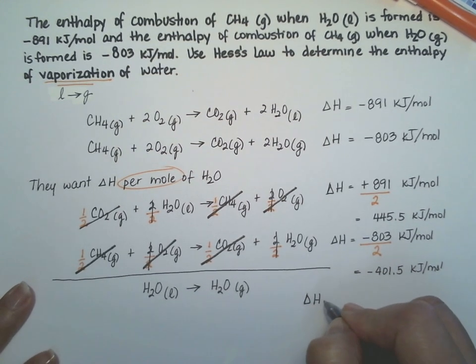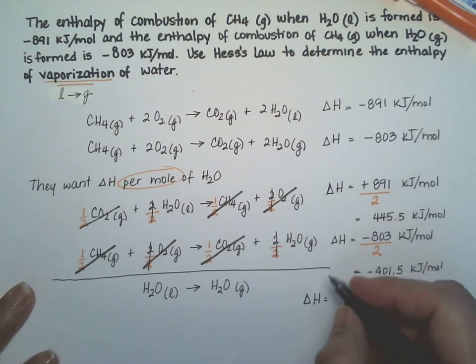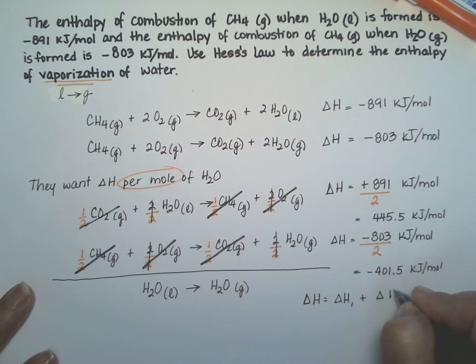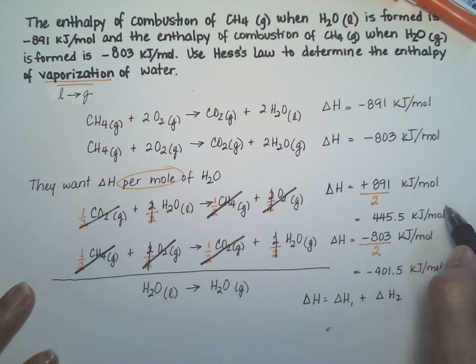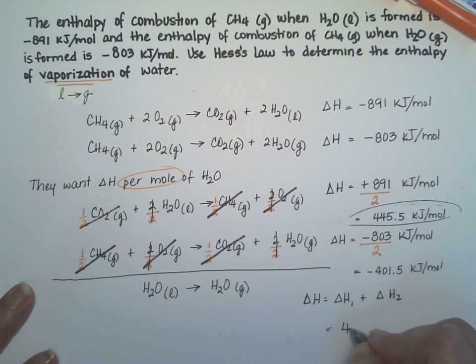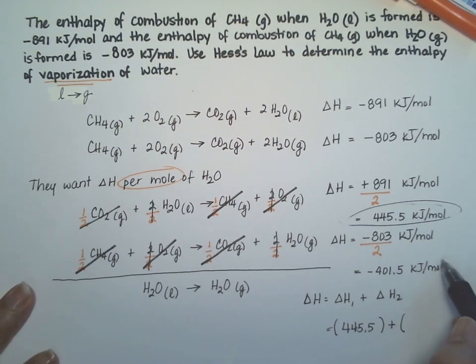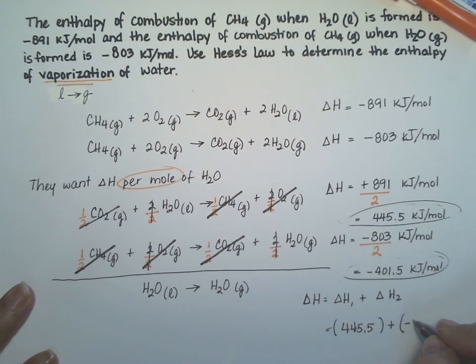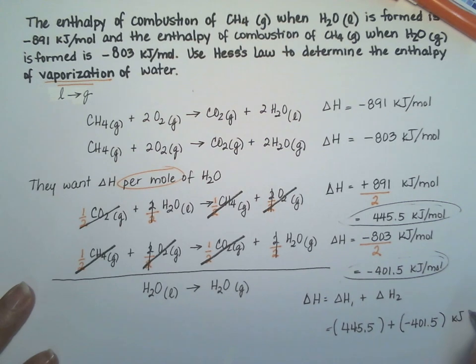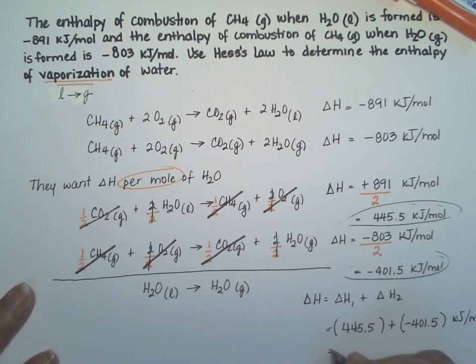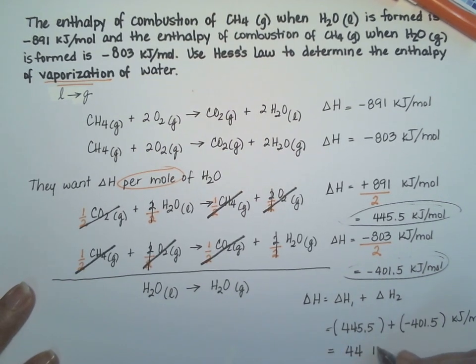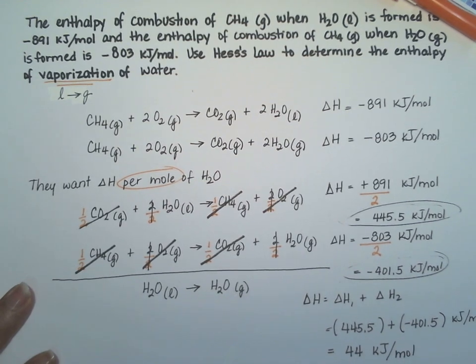The delta H is going to be delta H1 plus delta H2. So delta H1 was 445.5, I'm going to add that to this number over here, minus 401.5 kilojoules. This whole thing is going to be in kilojoules per mole. And when you add those two numbers, the vaporization of water has an enthalpy of 44 kilojoules per mole.